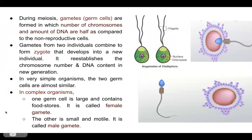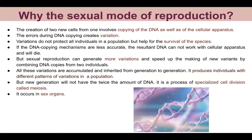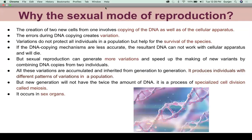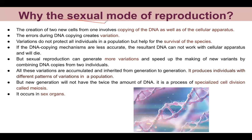Today we will talk about why the sexual mode of reproduction. This question is often asked: why sexual reproduction? Because in asexual reproduction, parents' clones are produced as-is. But in sexual reproduction, two different parents are involved, and that creates variation.